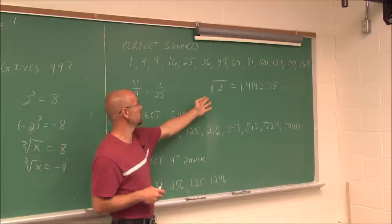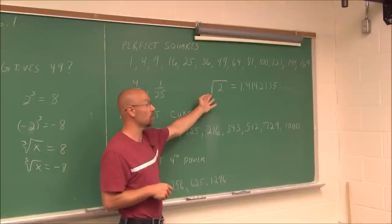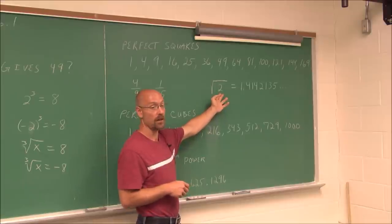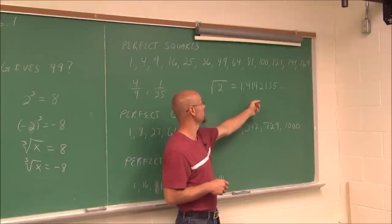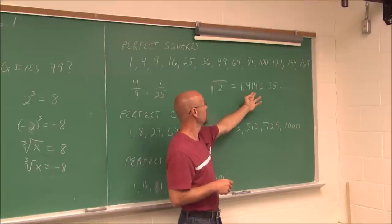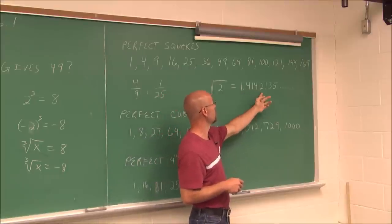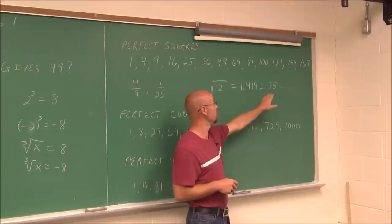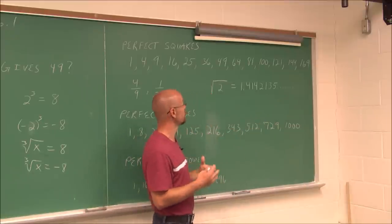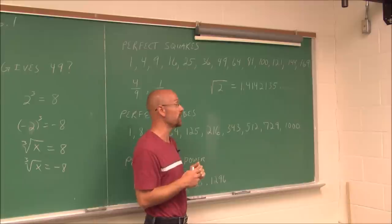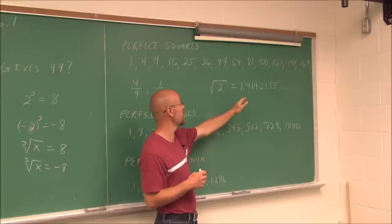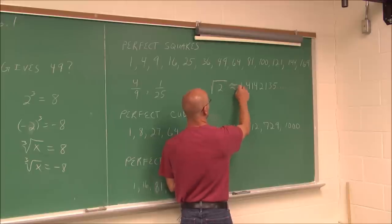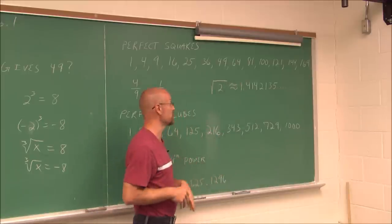Sometimes we'll see radicals of numbers that are not perfect squares. For example, the square root of 2 is an irrational number — a non-terminating decimal: 1.4142135 and continuing. Our calculators can only read so many digits, so eventually it has to be rounded off. This really isn't an equal sign — it's an approximation because the number is irrational.